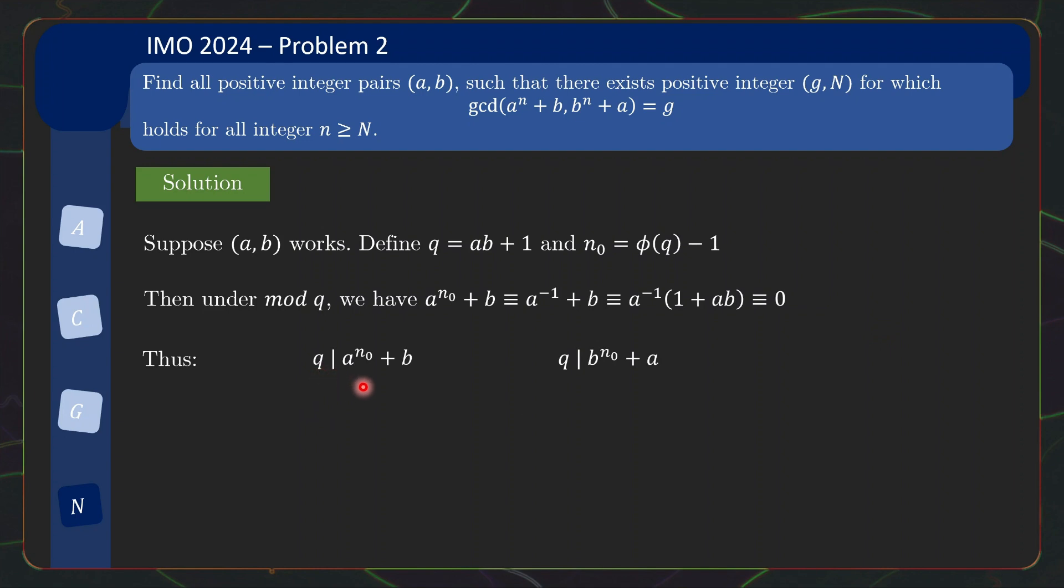So this means that q actually divides a^{n_0} + b, and by same argument, q divides b^{n_0} + a, and that's not just it. By the Euler theorem, a^{φ(q)} = 1, so I can tag on as many copies of a^{φ(q)} as 1 over here.